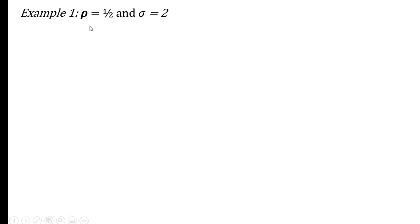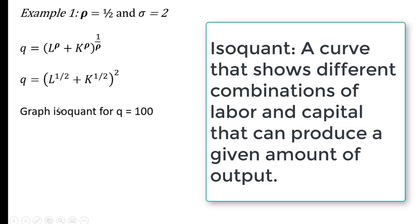In example 1, we're going to set rho equal to 1 half. And if rho is 1 half, the elasticity of substitution will equal 2, just using that formula on the first slide. So plugging in 1 half for rho. And now we're going to graph the isoquant for q equals 100.